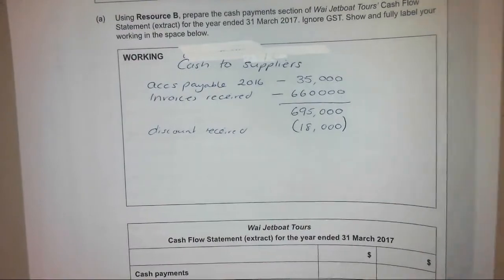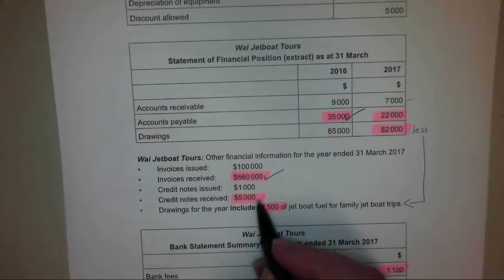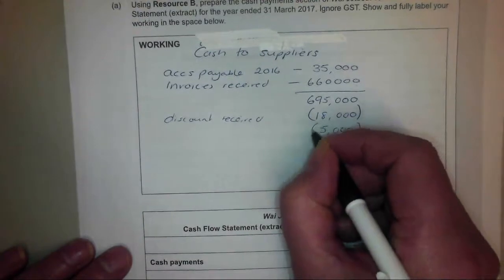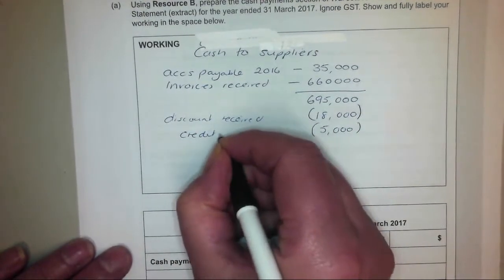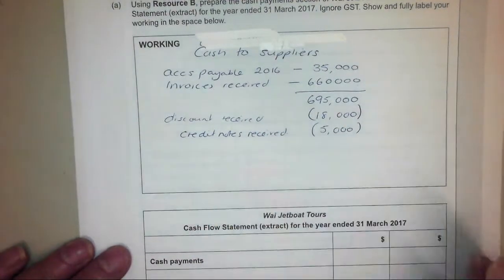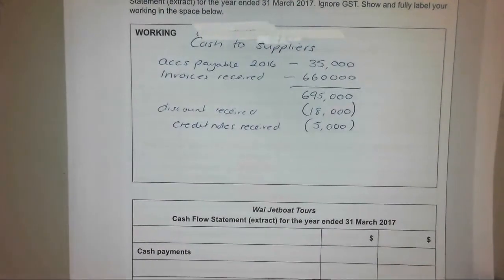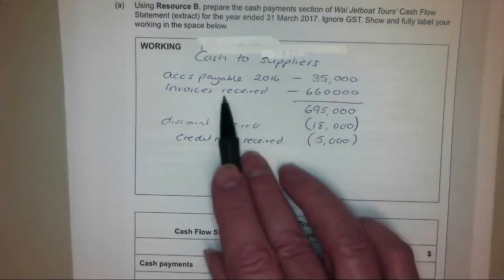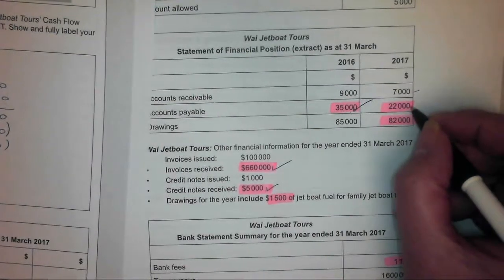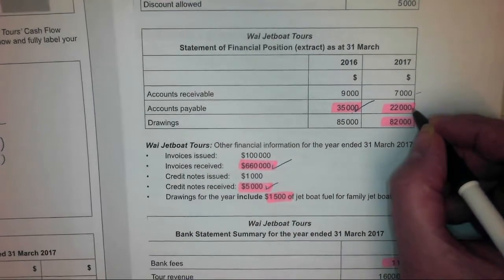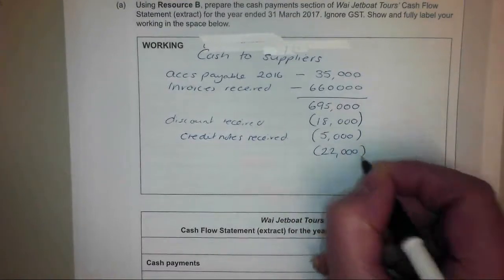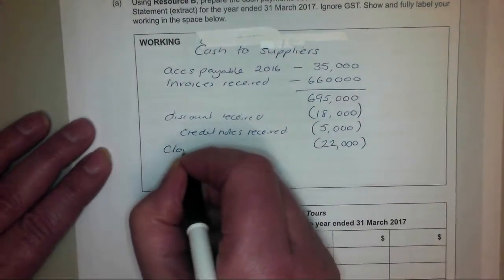I also received $5,000 worth of credit notes, which would have been a reduction in the amount that I had to pay. So credit notes received comes off that figure. And then finally, although I think I would have paid that amount of invoices received, remember I still had $22,000 outstanding — so I hadn't actually paid that by the end of the period. So take that closing $22,000 off there — that's closing accounts payable.